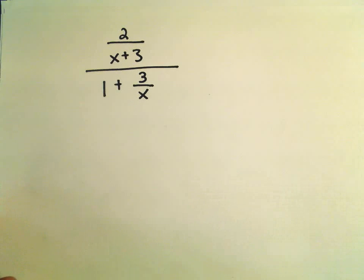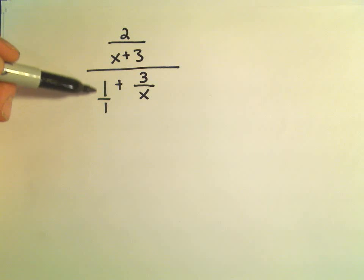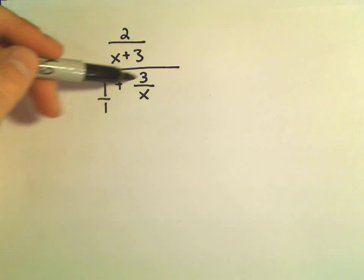So we have 2 over x plus 3 divided by 1 plus 3 over x. You can think about the 1 as being 1 divided by 1. And again, what I want to do is, the numerator is already a single fraction. I'm going to write the denominator also as a single fraction.